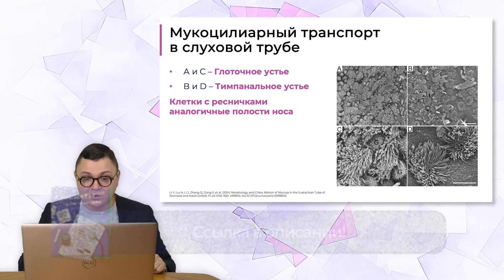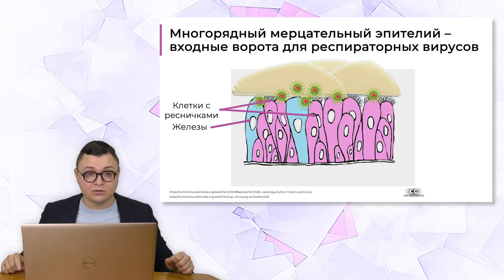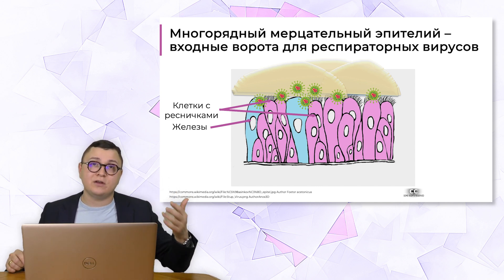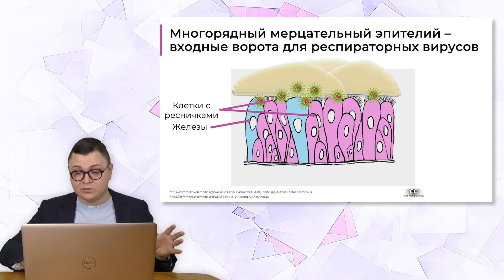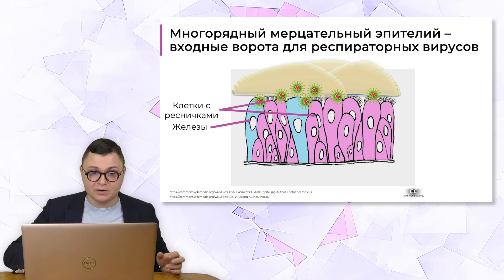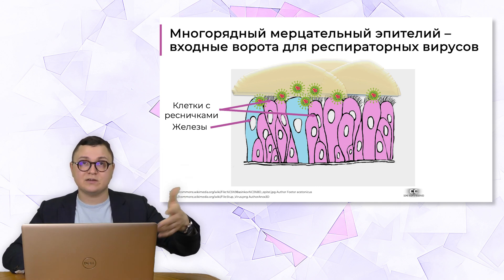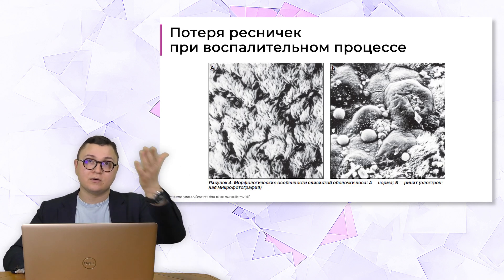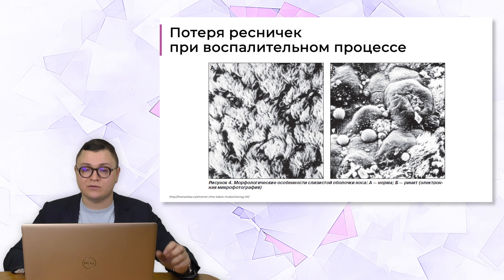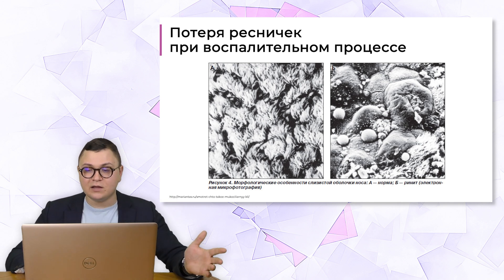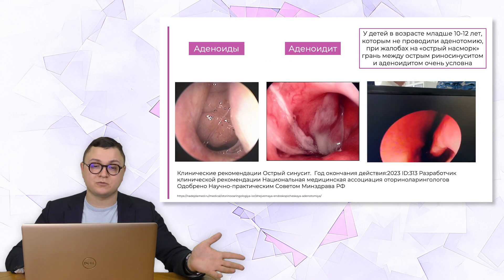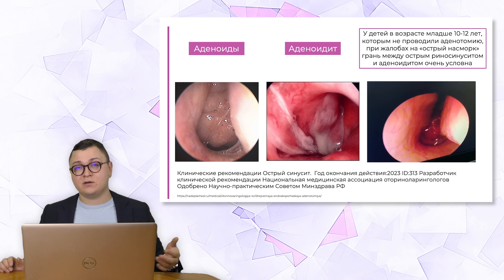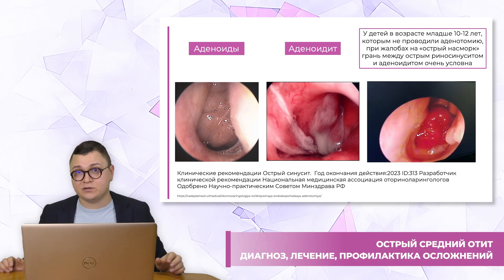Важным предрасполагающим фактором развития острого среднего отита являются нарушения вентиляции и мукоцилиарного транспорта – абсолютно такие же, как и для развития острого риносинусита. В первую очередь это респираторные вирусы, для которых ресничные клетки эпителия являются входными воротами. Они первые погибают при развитии воспалительного процесса. Секреция слизи продолжается, развивается отёк, воспаление, происходит блок устья, слизь не выводится, реснички теряются. В детском возрасте на фоне ОРЗ практически всегда развивается обострение хронического аденоидита.